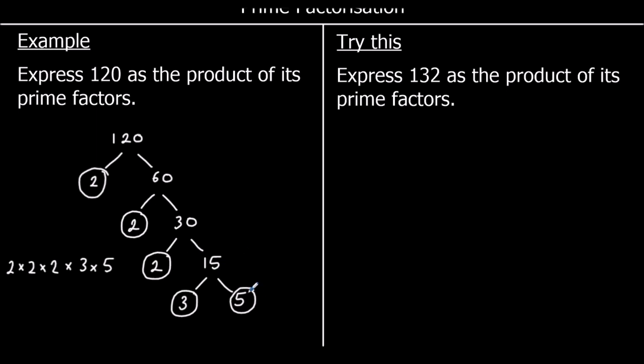And we can check this by going back up the tree. So 5 times 3 is 15, 15 times 2 is 30, 30 times 2 is 60, and 60 times 2 is 120.